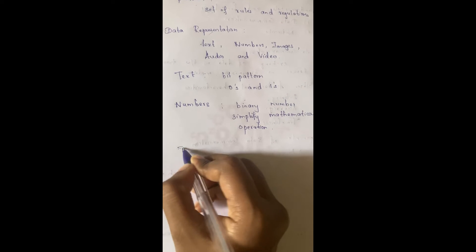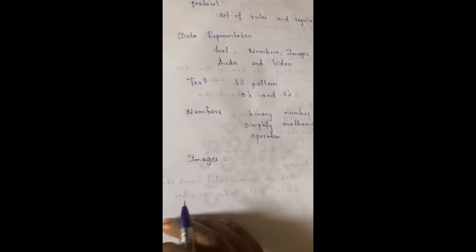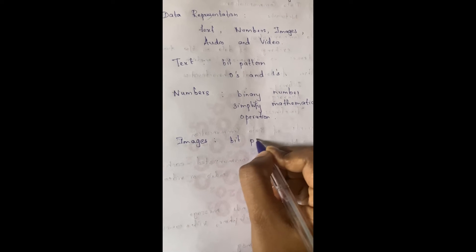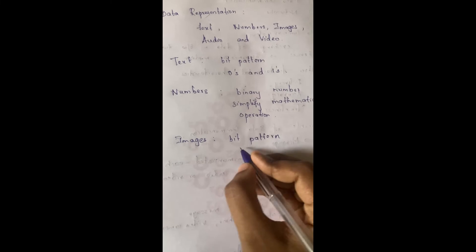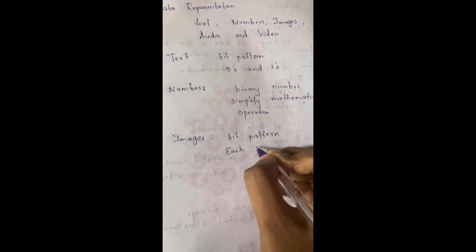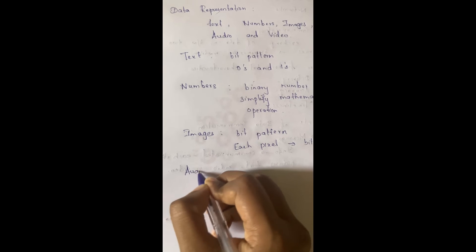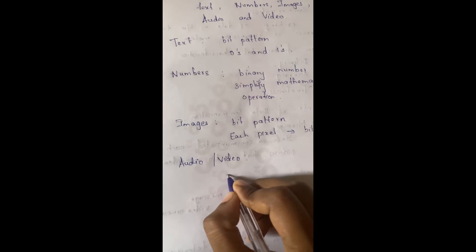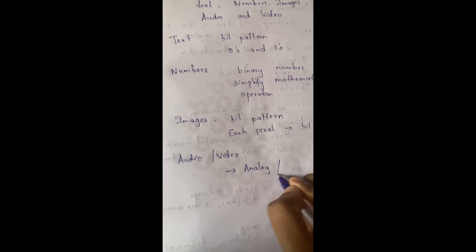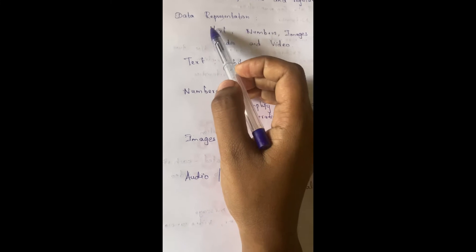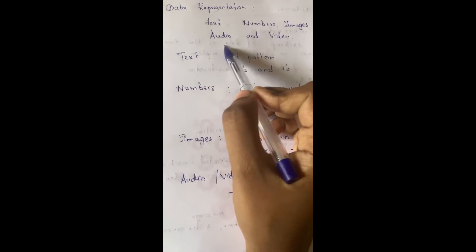The next format is images. Images are also represented by bit pattern, and here it will be in the form of pixels. Each pixel is assigned with a bit pattern. The next format is audio or video, which can be converted into analog or digital.